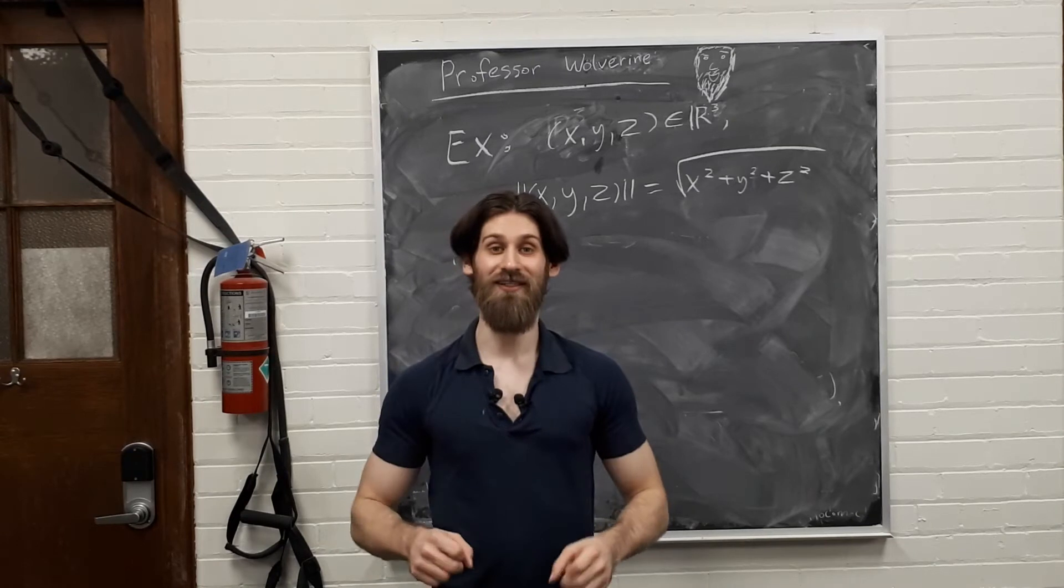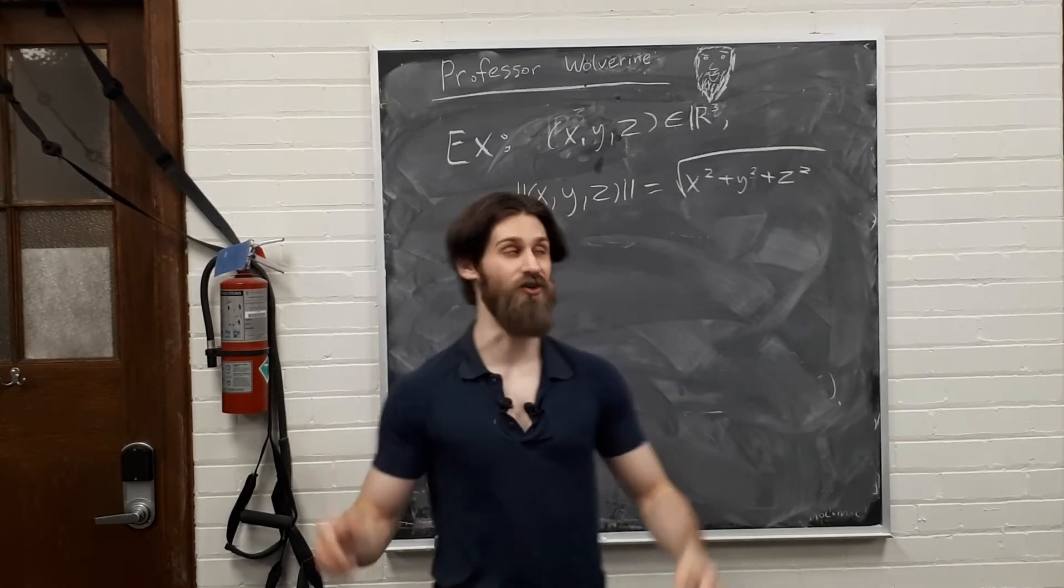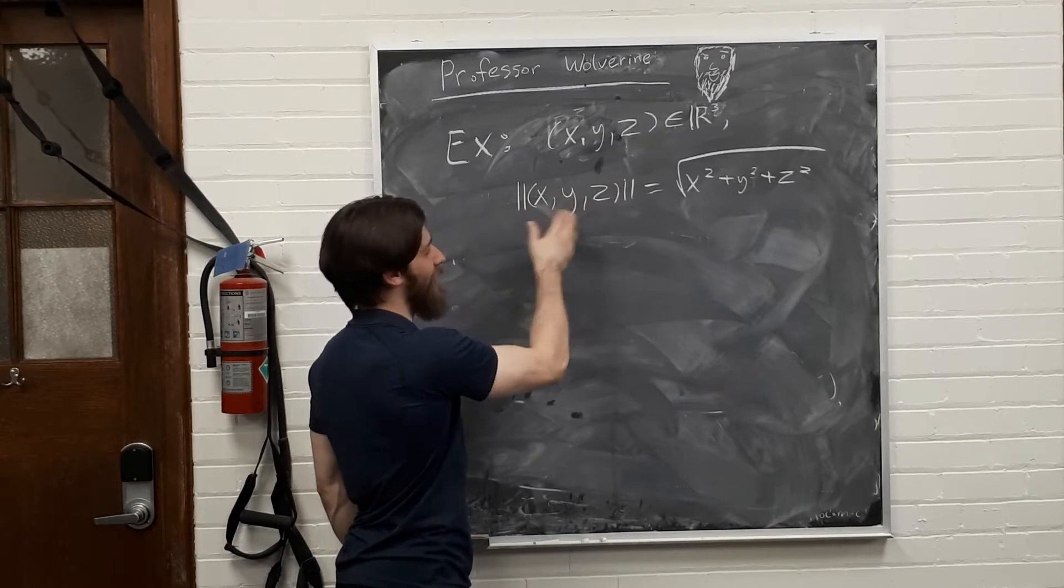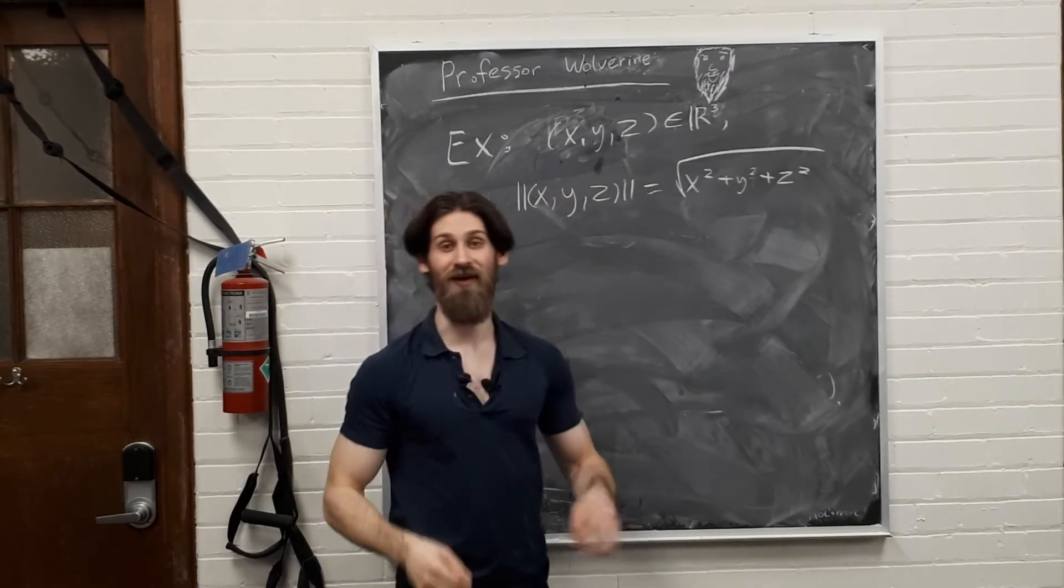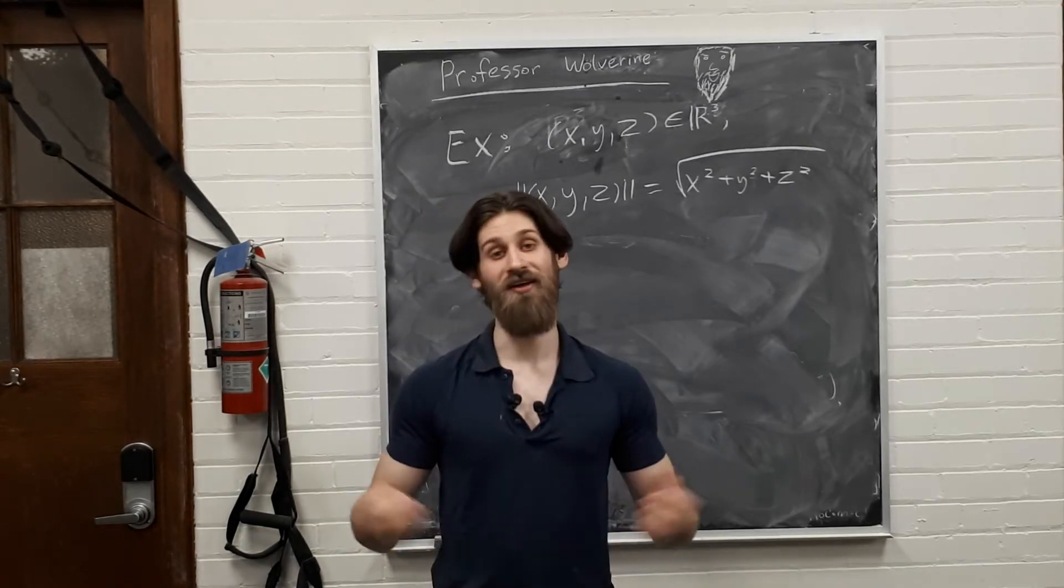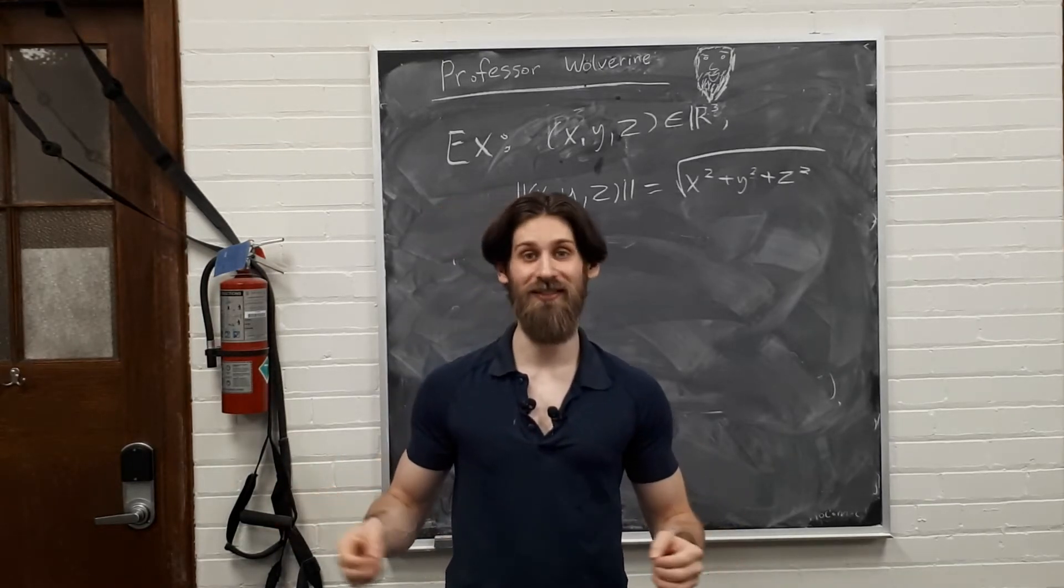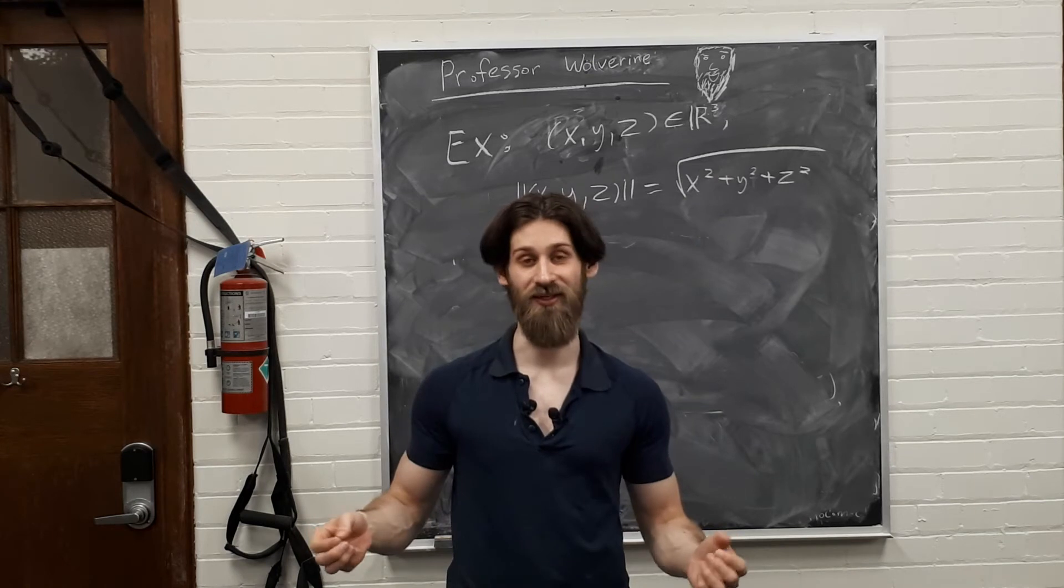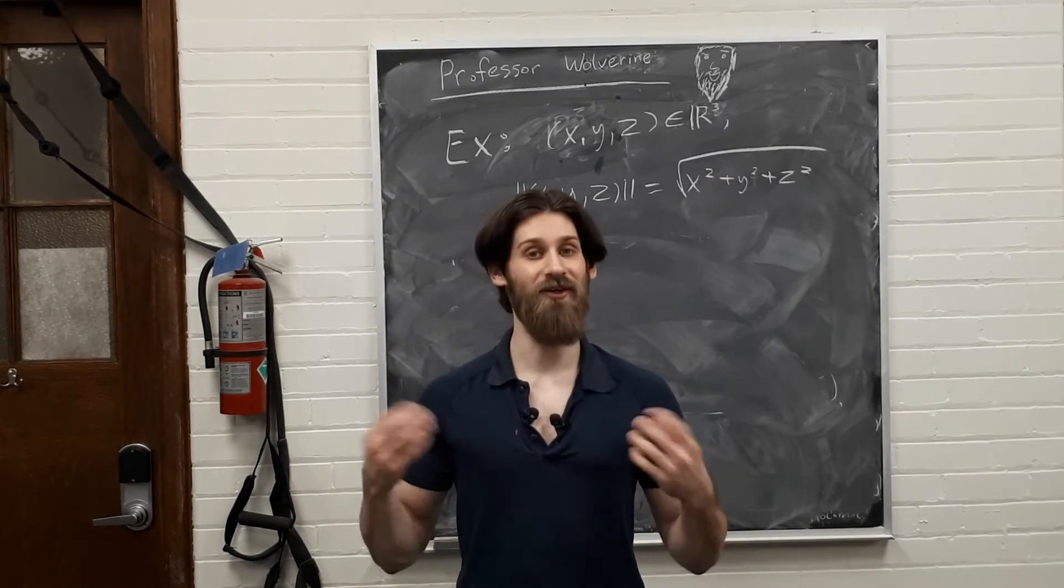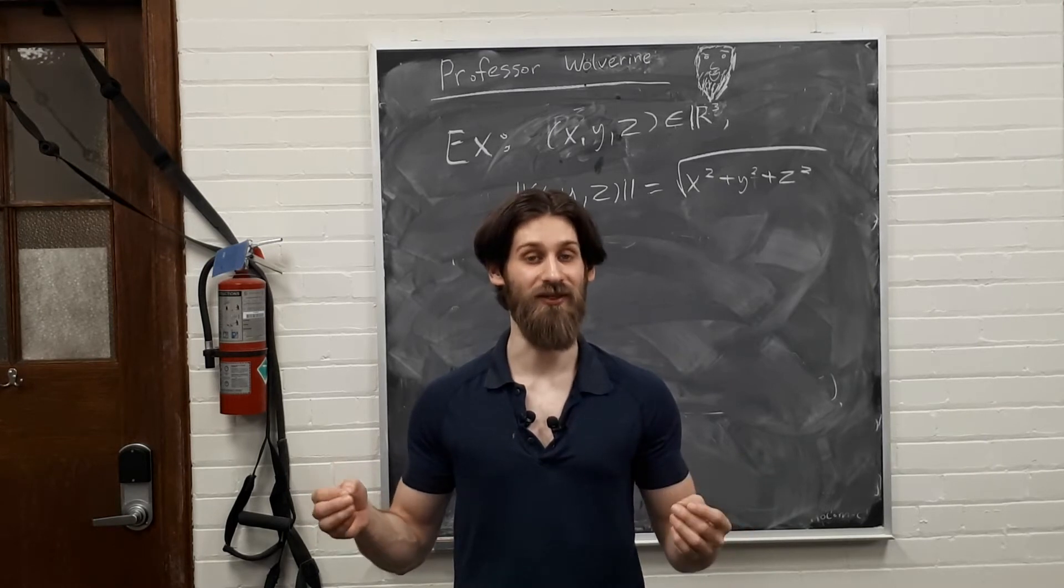So one example of this is R3 with the usual Euclidean norm. If X, Y, Z is in R3, the norm of the triplet X, Y, and Z is just the square root of X squared plus Y squared plus Z squared, you know, Pythagorean theorem. Now, you can have both finite dimensional vector spaces and infinite dimensional vector spaces. Recall, the vector space is infinite dimensional if there is no finite basis. Let me give you a whole class of examples called P norms, otherwise known as little LP spaces.